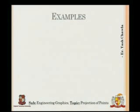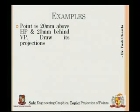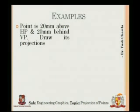The next example: the point is 20 mm above HP and 20 mm behind VP. Since it is above HP, it can be in the first or second quadrant. Since it is 20 mm behind VP, it will be in the second quadrant. This is a very special case — when you see the result, you will be amazed.